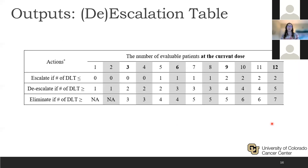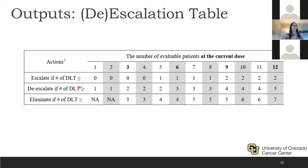A table is also provided to help calculate whether the number of DLTs is within the escalation or de-escalation boundary. On the top row we have the number of participants treated at the current dose, and the cells show the number of DLTs needed to trigger escalation, de-escalation, or dose elimination due to safety. Some cells show NA, simply because if only one or two patients have been treated, we don't yet have enough information to eliminate the dose.